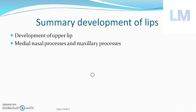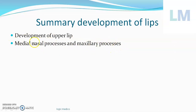In summary, the upper lip develops from four processes: two medial nasal processes that join to form the philtrum of the upper lip, and two maxillary processes that form the lateral portions on the right and left sides. So if anyone asks, the upper lip is developed from four processes in total. If any one of these four processes fails to unite, the result is cleft lip.